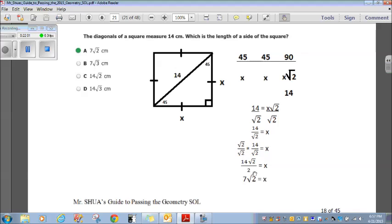Well, look here. Numerator and denominator, 14 and 2 have 2 in common. 2 goes into 2 once. 2 goes into 14 seven times. So, 7 radical 2 equals our X, which is choice A. Okay? If you remember your special right triangle relations right here, this is an easy question to answer. Okay, let's move on.